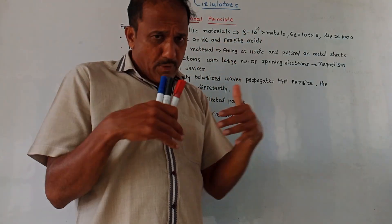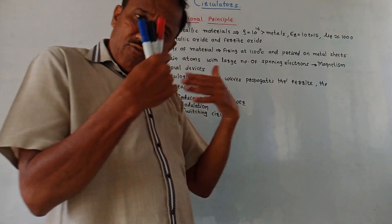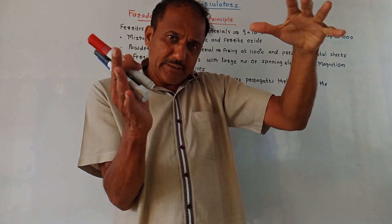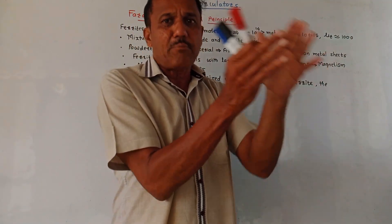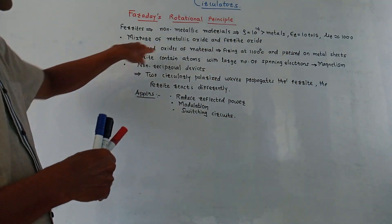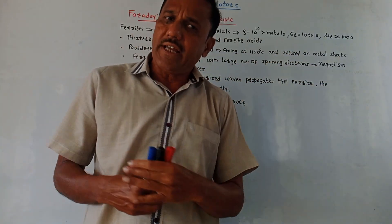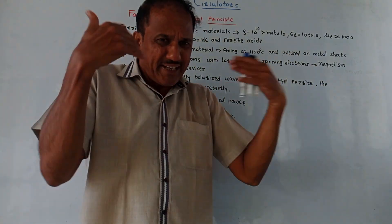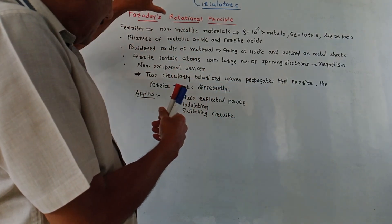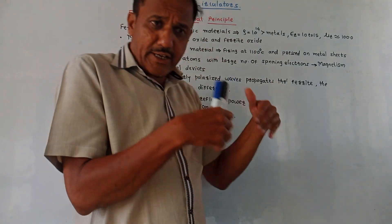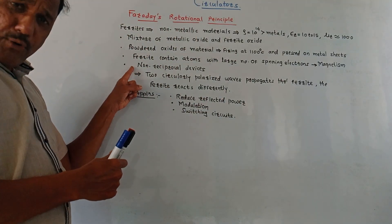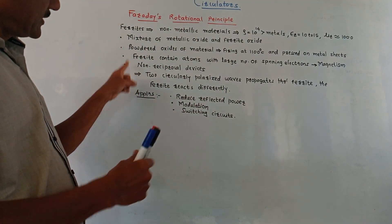These powdered oxide materials are fired at around 1100 degrees centigrade, then pressed on some metal sheets to form the ferrite material. The ferrite contains atoms with a large number of spinning electrons. Whenever there is spinning of electrons, magnetic dipoles are created, so due to the large number of atoms containing spinning electrons, there is an effect of magnetism.